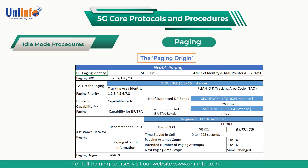The base station uses Downlink Control Information (DCI) format 1-0 to allocate PDSCH resources for the RRC paging message. The CRC bits are scrambled using the P-RNTI to indicate that the PDSCH resource allocation is applicable to the paging procedure.